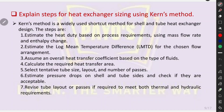Tell me the steps for heat exchanger sizing using Kern's method. Kern's method is a widely used shortcut method for shell and tube heat exchanger design. The steps are: first, estimate the heat duty based on process requirements using mass flow rate and enthalpy change. After that, estimate the log mean temperature difference (LMTD) for the chosen flow arrangement. Then, assume an overall heat transfer coefficient based on the type of fluids. Next, calculate the required heat transfer area. After that, select tentative tube size, layout, and number of passes. Then, estimate pressure drops on shell and tube sides and check if they are acceptable. Finally, revise tube layout or passes if required to meet both thermal and hydraulic requirements.